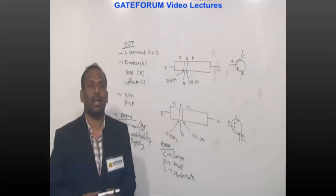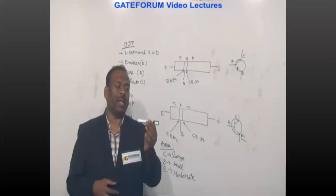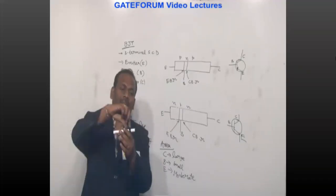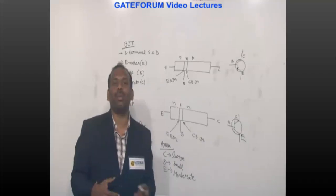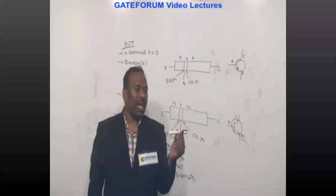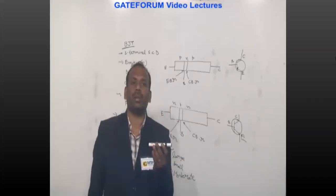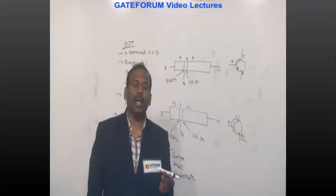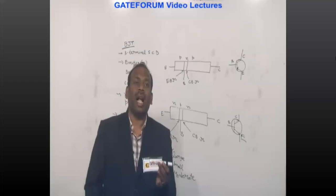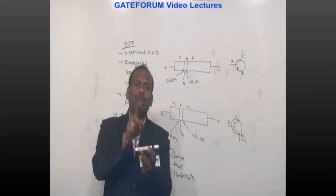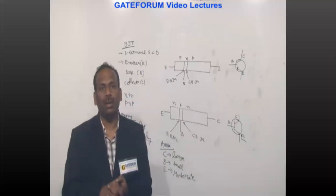To construct a PNP transistor, take a P-type semiconductor and add N-type impurities in between, giving a P-N-P structure. For an NPN transistor, take silicon and add N-type impurities on either side with P-type impurities in between.